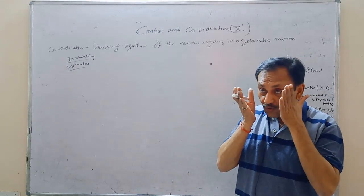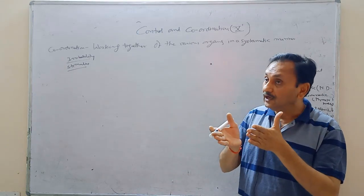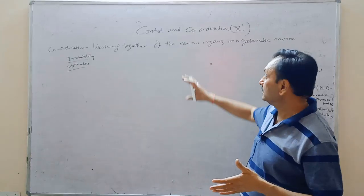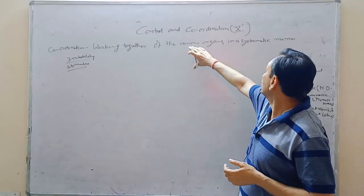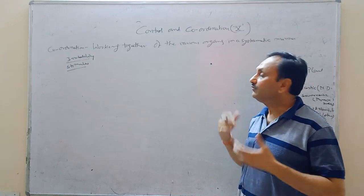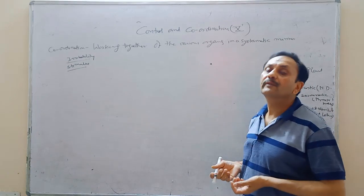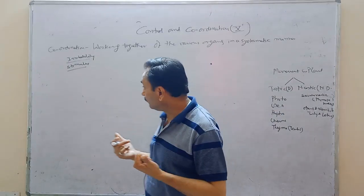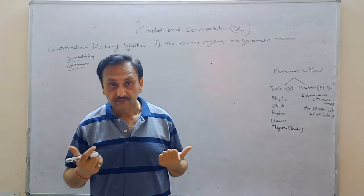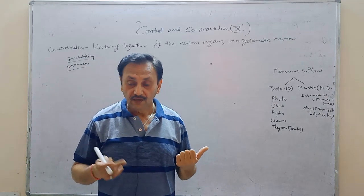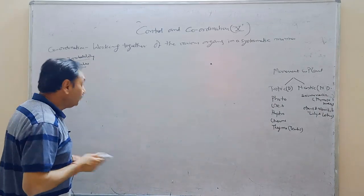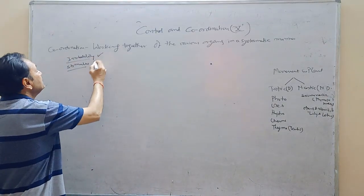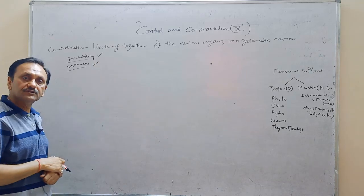So firstly, in this particular lecture we will concentrate on the case of the plant. What is the cause of movement? Why does the plant move? What type of movement is it? So firstly, two words: one is irritability and another is stimulus.